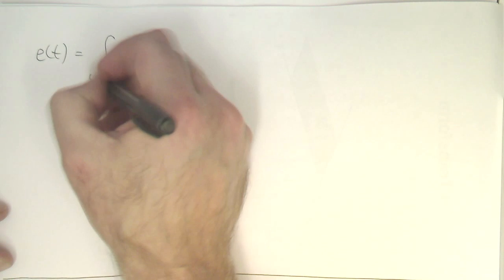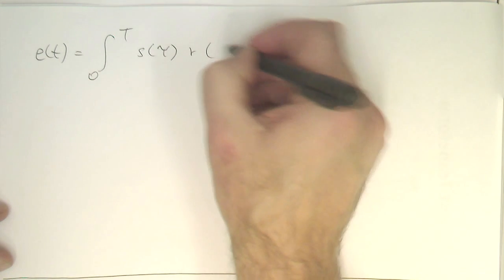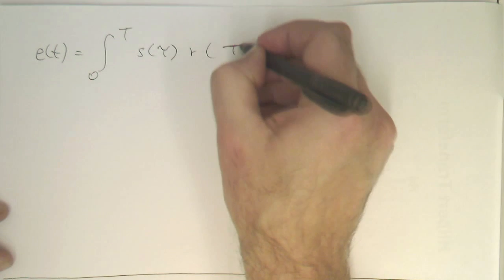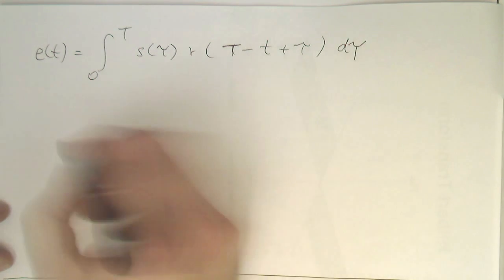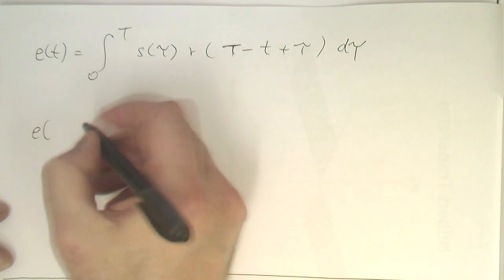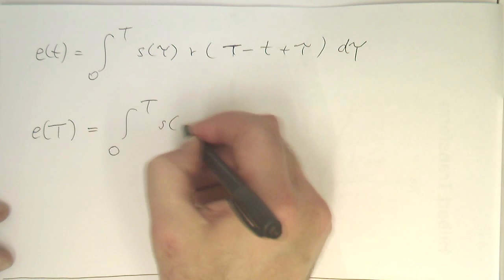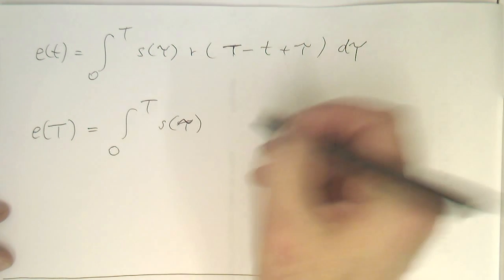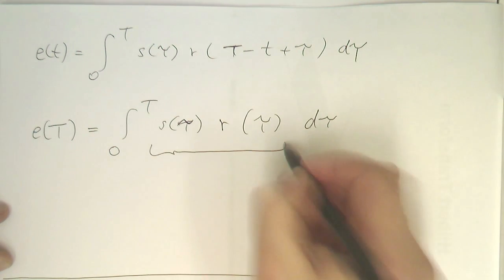And so with that we have starting at T here and then we're subtracting T from it and adding tau, so we see this is coming towards a correlation operation here. If we multiply this out here, E of T, then we're getting here integral from 0 to T, s of tau and then R of T minus T plus tau d tau. Now in order to get rid of this T here, we could just evaluate this E of T at E of capital T. If we do that, then we have here S of tau multiplied by just R of tau d tau, and this is here a correlation operation.